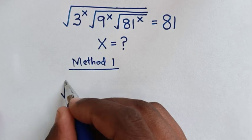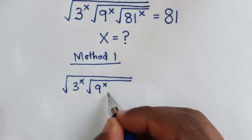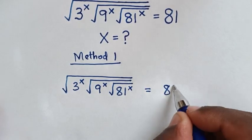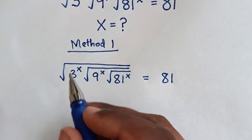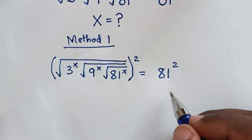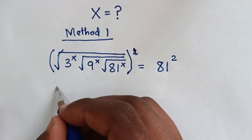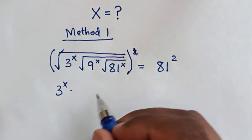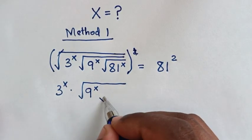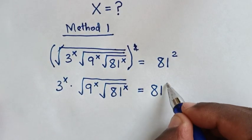Let's write it: square root of 3 to the power of x, under square root of 9 to the power of x, under square root of 81 to the power of x, is equal to 81. To remove the first square root, we'll square both sides. This square root will cancel with the square, so we get 3 to the power of x times the square root of 9 to the power of x times the square root of 81 to the power of x, is equal to 81 squared.